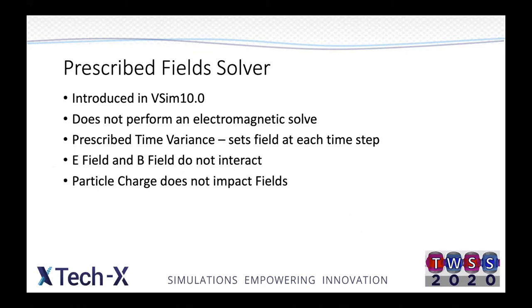To also help with this, we have the prescribed field solver, introduced in vSIM 10.0. The prescribed field solver does not actually perform an electromagnetic solve. What it does is import an electric and magnetic field mode, then give it a prescribed time variance, setting that field at each time step. The E field and B field don't interact, and the particle charge does not impact these fields. This is very useful when working with field scaling electrons, where concern exists about the field scaling electrons impacting the field solve — that won't happen here.